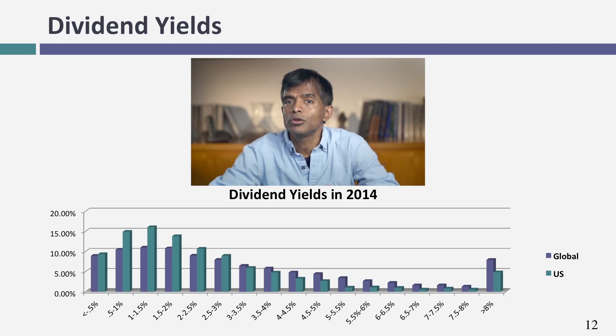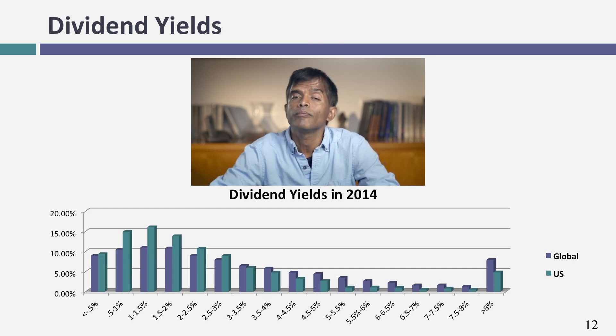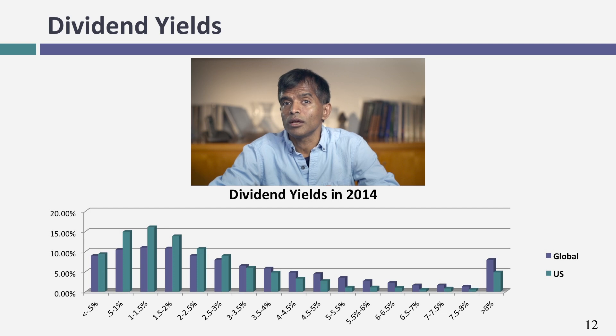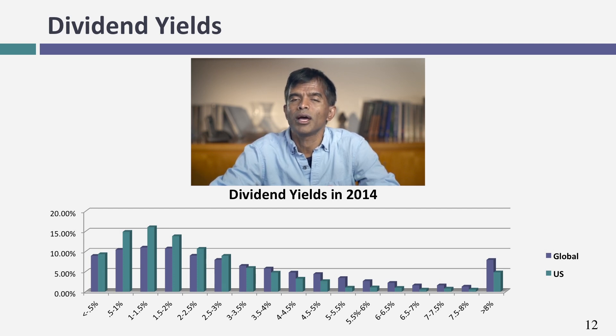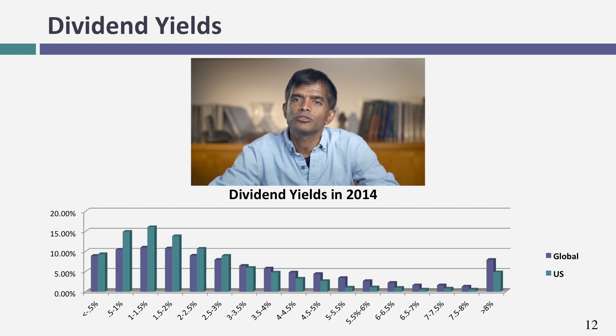Now let's look at the dividend yield. The median dividend yield for a U.S. company is now about two percent, down from about three and a half to four percent maybe 30 years ago. That reflects U.S. companies increasingly shifting from paying dividends to stock buybacks. What it also tells you is: if you invest money in stocks, don't expect to make the bulk of your returns from dividends. Even though there are a few stocks with dividend yields of four, five, or six percent, most stocks — if you make money — you're going to make it off price appreciation, not dividends.